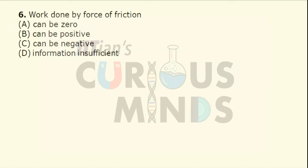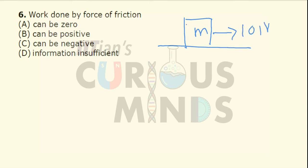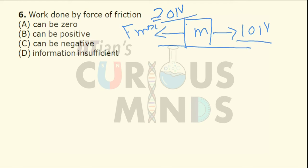Work done by the friction force can be zero. For example, if I take a mass and apply a force of 10 Newton, but the maximum static frictional force is 20 Newton, then since 20 Newton is greater than 10 Newton, the body will not move. In this case the work done will be equal to zero due to friction. So option A is correct.